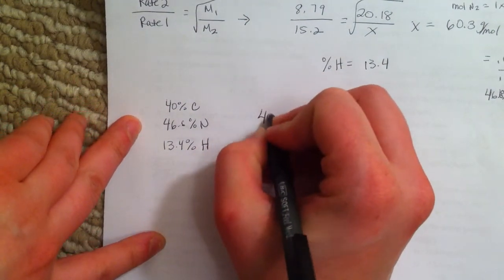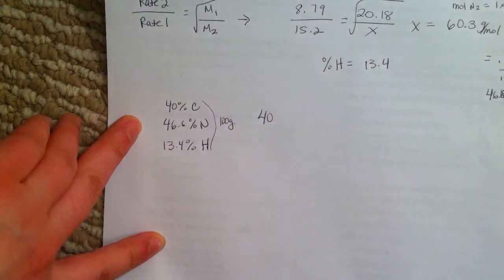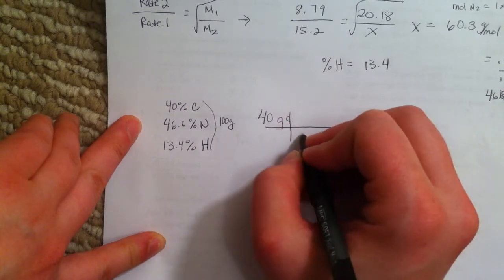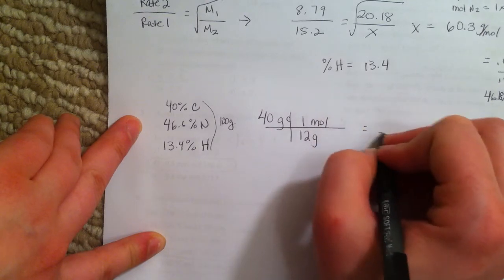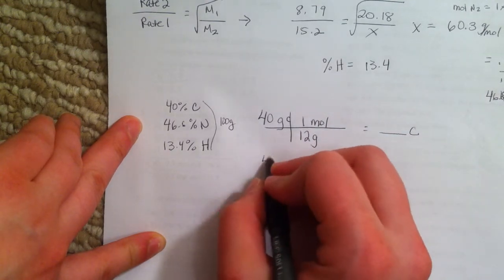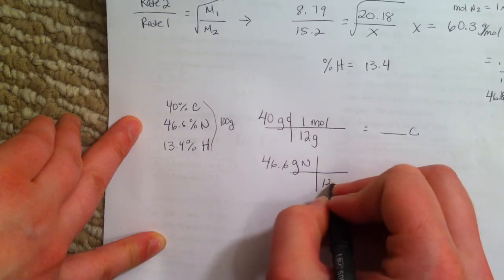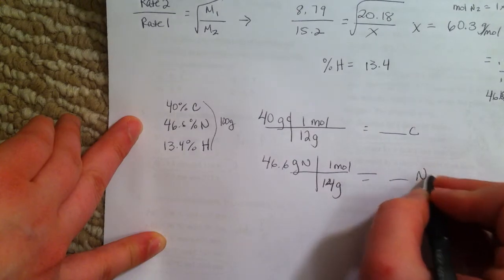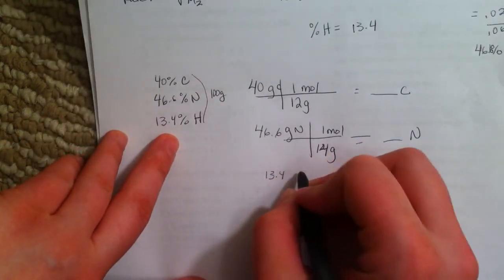We start with grams. I pretend like I have 100 grams. So if I have 100 grams, then 40 grams would be carbon, 46.6 grams nitrogen, and 13.4 grams hydrogen.